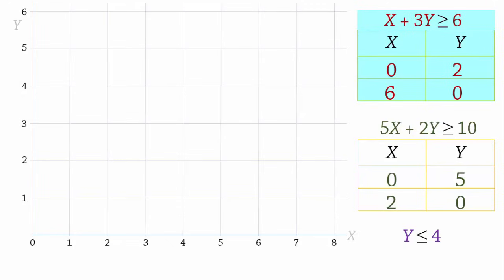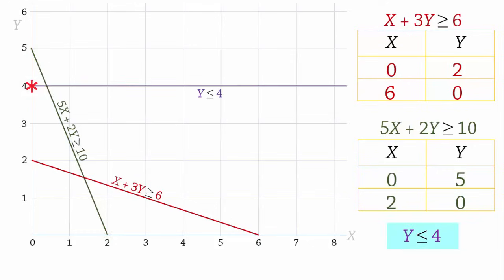Drawing the line for the first constraint, we have the points (0, 2) and (6, 0), which we join to form the constraint line. For the second constraint, we have (0, 5) and (2, 0), which we also join to form the constraint line. For y less than or equal to 4, the line is simply at y equals 4.